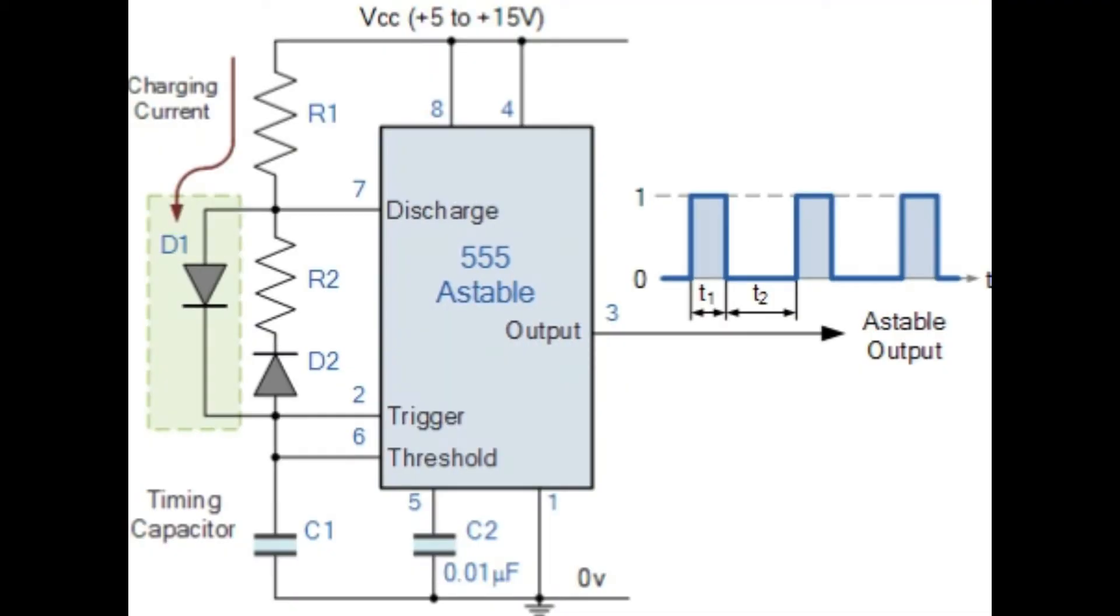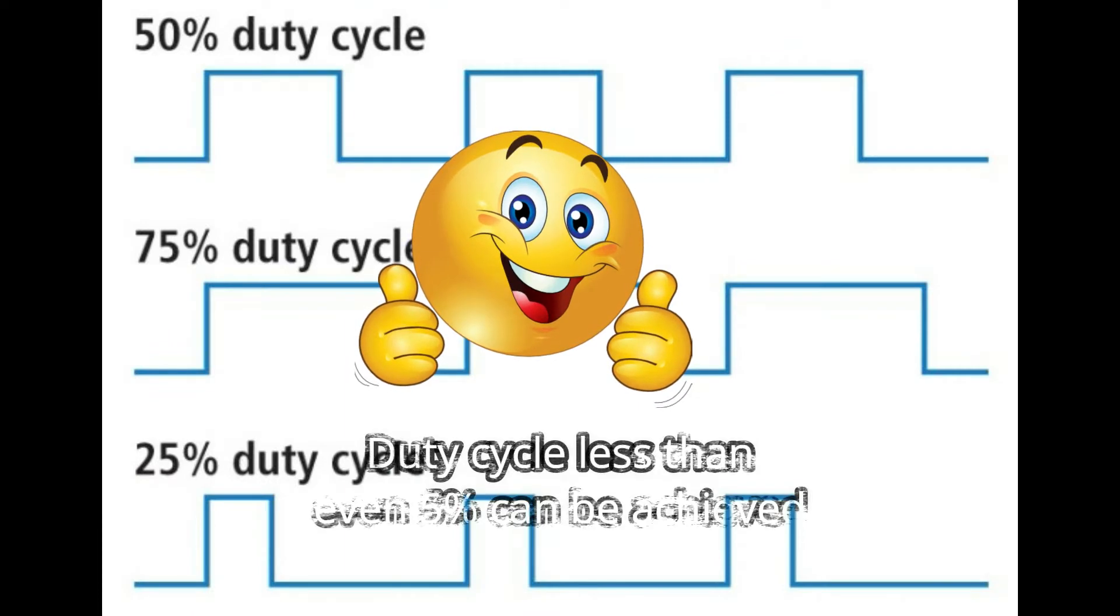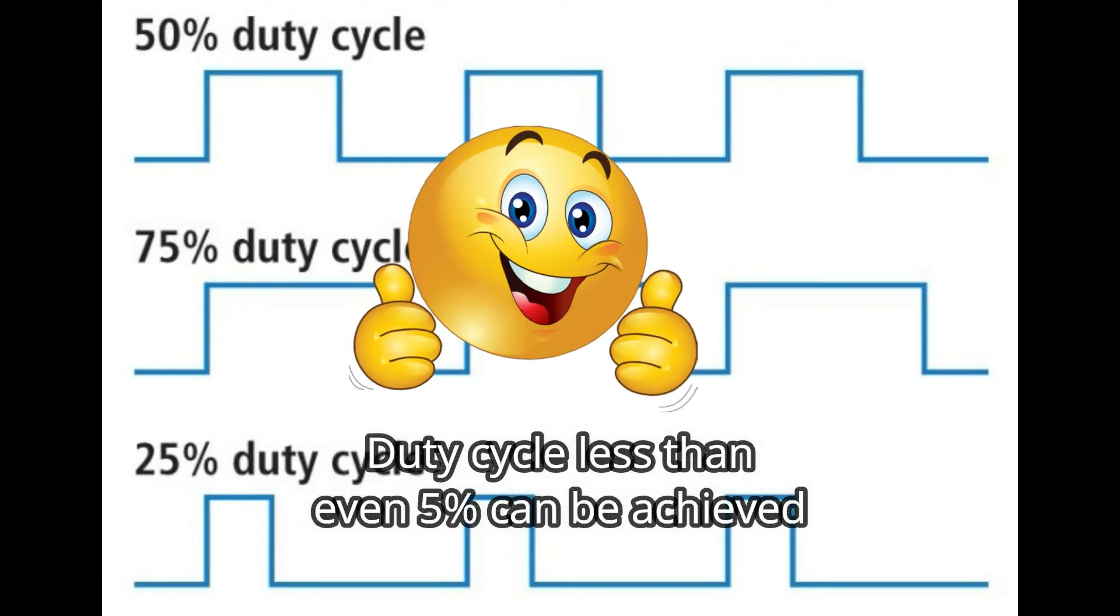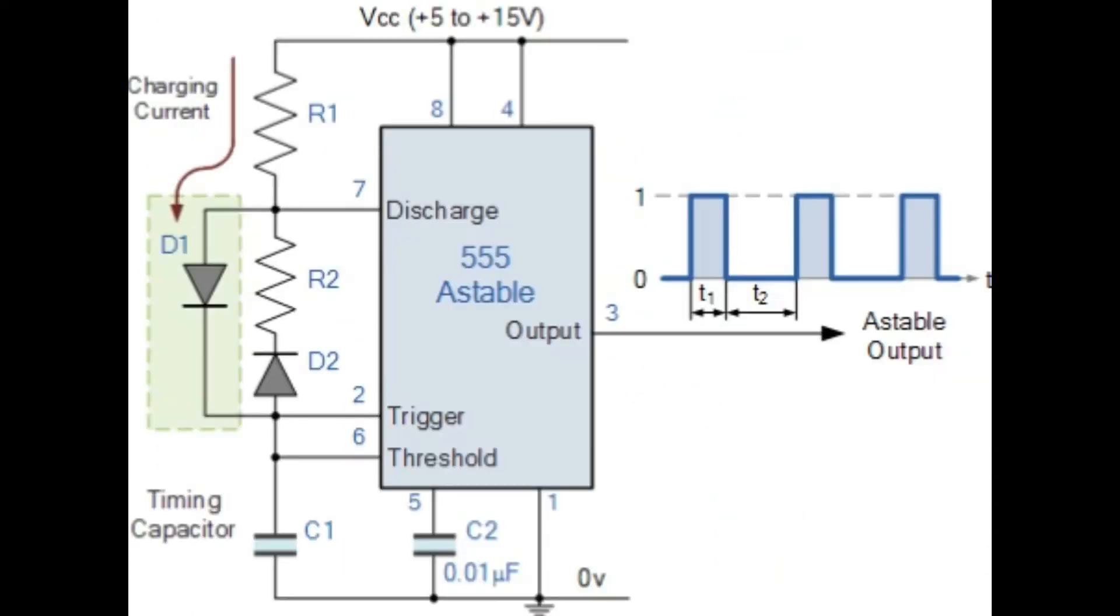So we need to make few modifications in the circuit. Adding the diodes D1 and D2 will do this. Diode D1 serves to charge the capacitor however D2 blocks it. D2 allows the discharging current only. By doing this we can modify the duty cycle of output signal even less than 5 percentage.